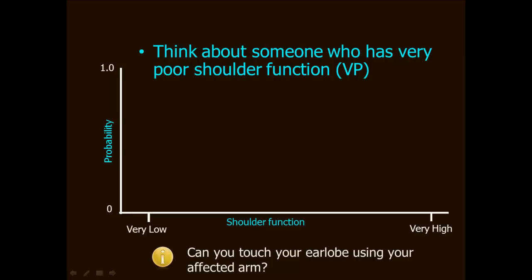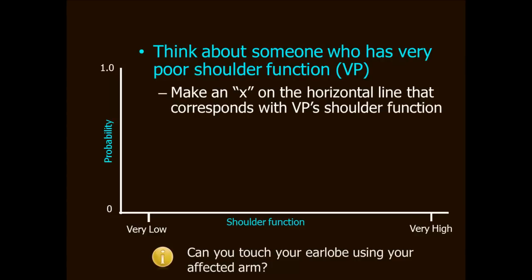Now picture a person who has very poor shoulder function. Conveniently this person goes by the informative initials VP for very poor. Now make a mark on the x-axis somewhere between very low and very high and choose the location based on where you think VP would be on the continuum from very low to very high shoulder function.